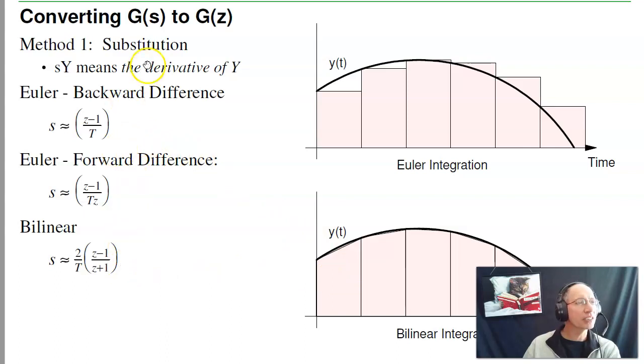So wherever you see an s in G(s), substitute, do some algebra, and you'll have the discrete time version of G.